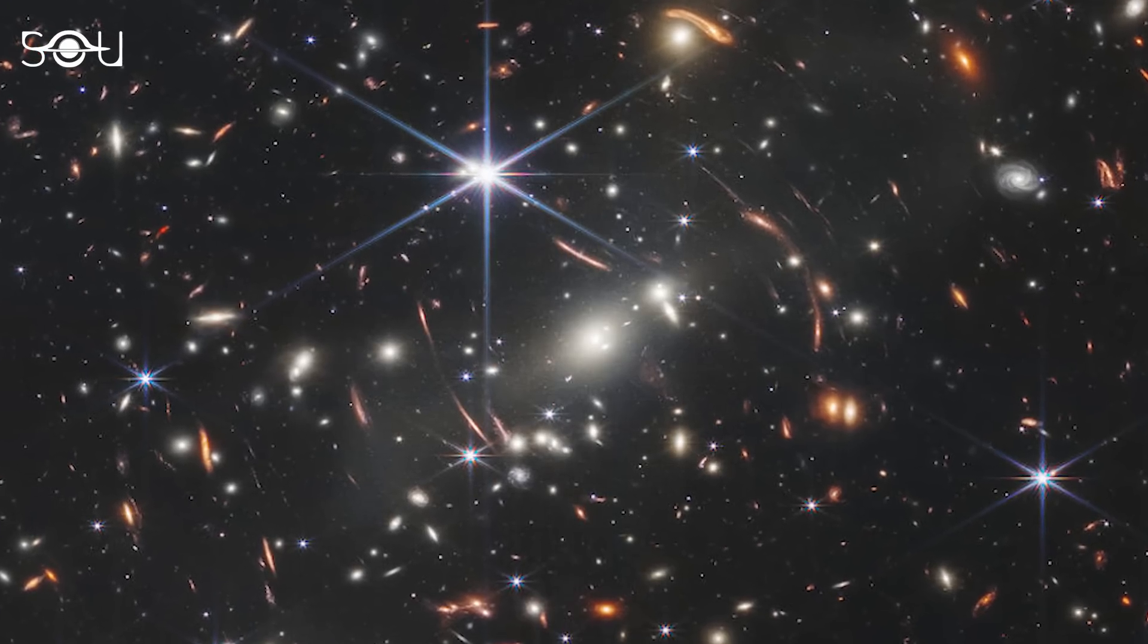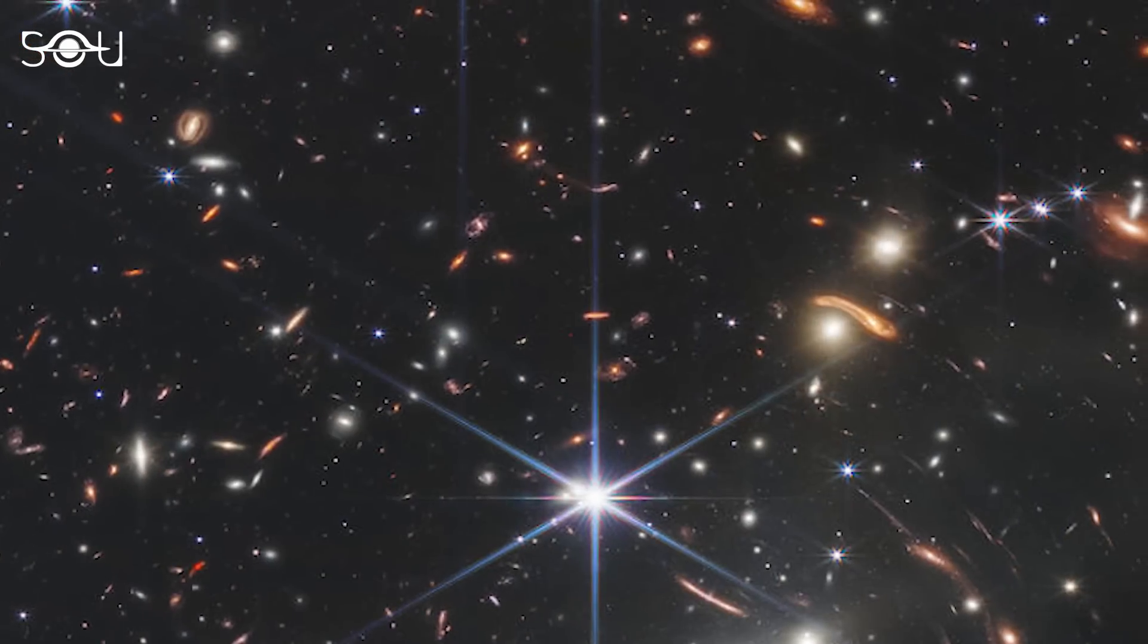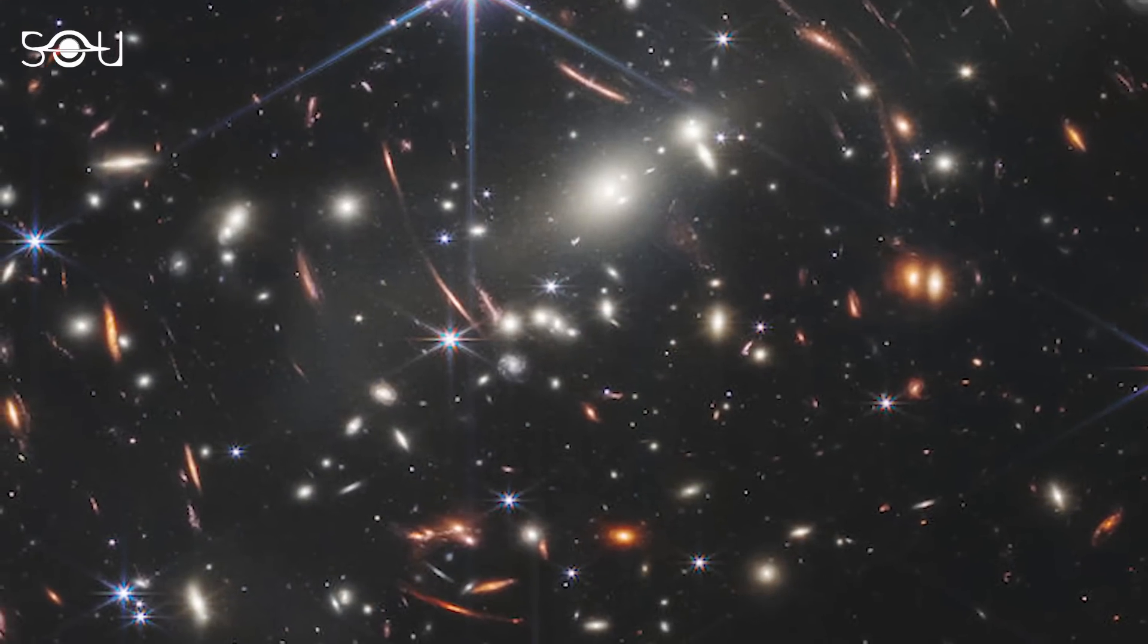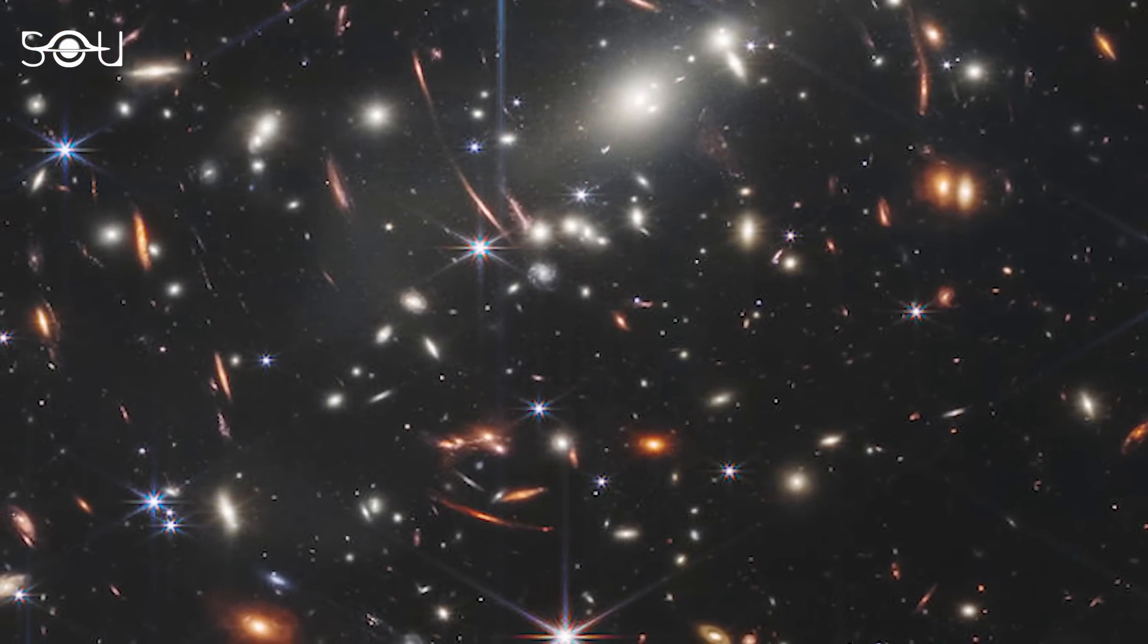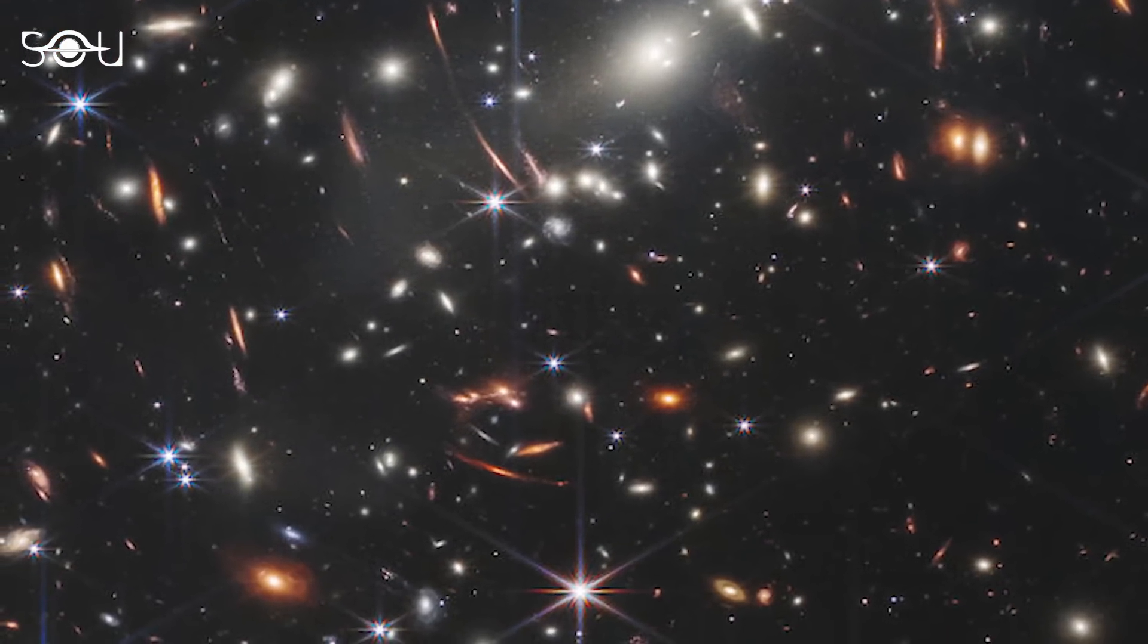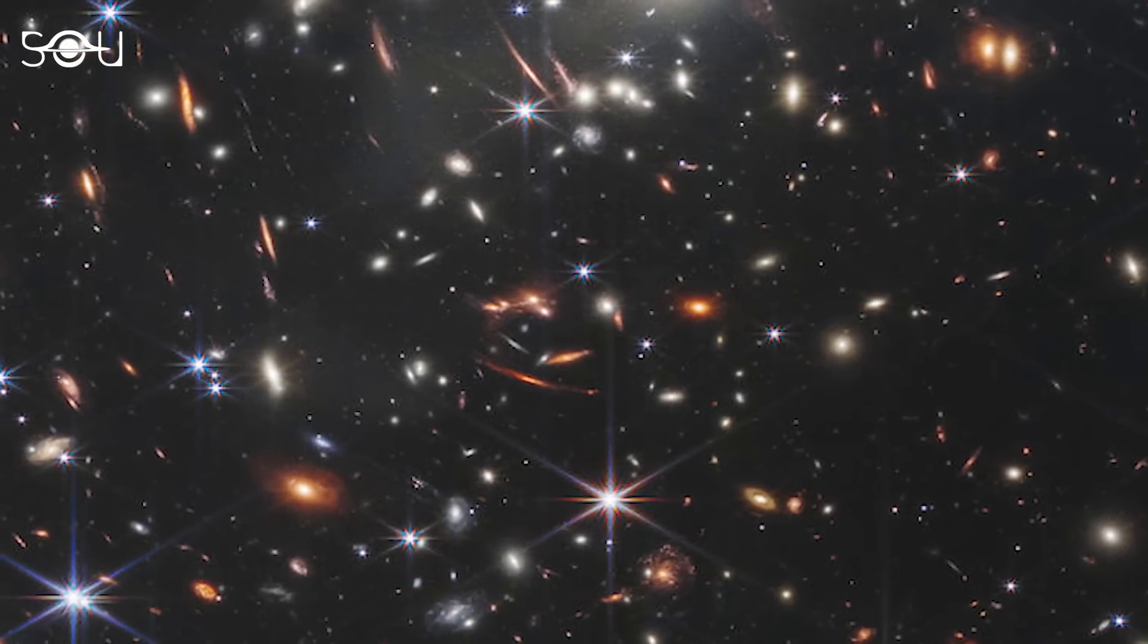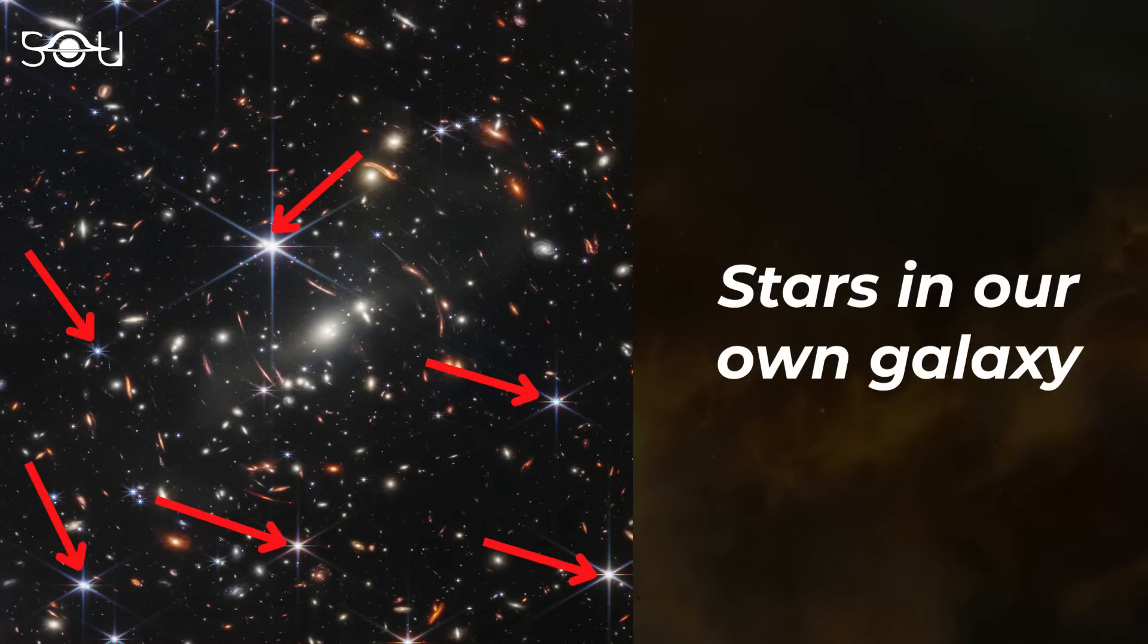Let us begin with the first image that NASA chose to release, a galaxy cluster named SMACS-0723. It is the deepest and sharpest infrared image of the distant universe ever taken by a telescope. Every pixel of this picture is overflowing with details. Let us start with the brightest spots with spikes in this image. They are the stars of our own galaxy, more like the objects sitting on our noses.